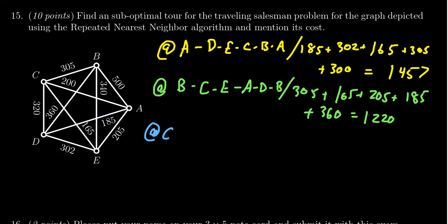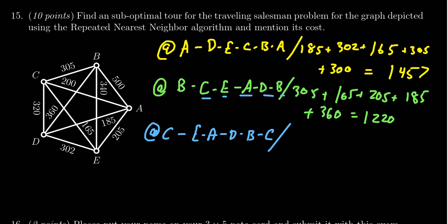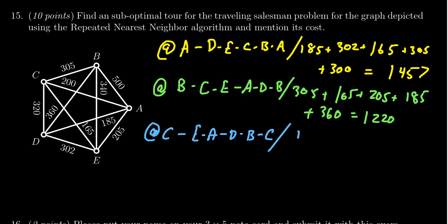Let's write that down: C to E to A to D to B to C. Note that this is the exact same path we just did a moment ago, so that also costs 1220.